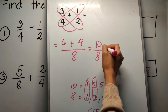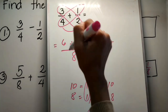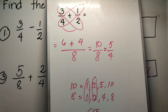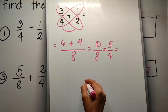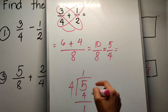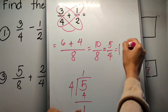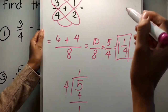Yung GCF nila is 2. 10 divided by 2 is 5. 8 divided by 2 is 4. So hindi pa rin ito ang ating final answer. Why? 5 fourths is an improper fraction, so you have to change it into mixed number para ma-simplify. 1 and 1 fourth is the final answer.